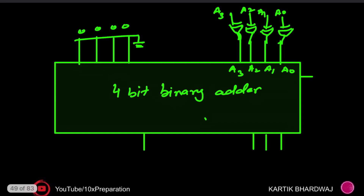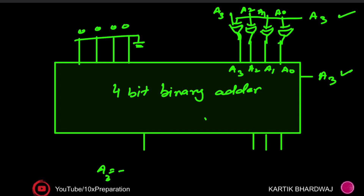We consider a3 as the second input, and the same a3 is fed into that input as well. So what happens: whenever the number is negative, a3 is going to be 1 (negative), and this circuit performs a subtraction. It computes zero minus A, which gives minus A.